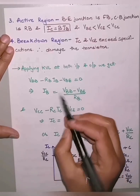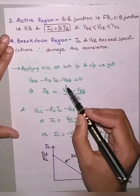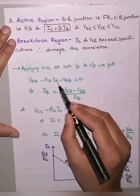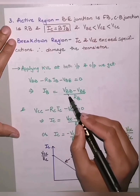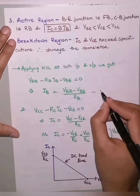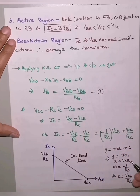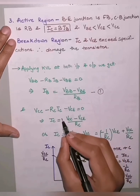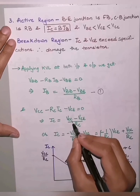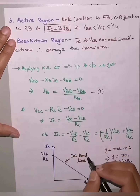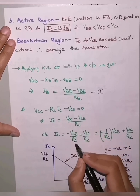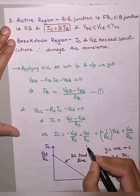From the input KVL equation, VBB − RB·IB − VBE = 0, we can derive IB = (VBB − VBE) / RB — call this equation 1. From the output KVL, we get IC = (VCC − VCE) / RC, which can be rewritten as IC = −VCE/RC + VCC/RC.